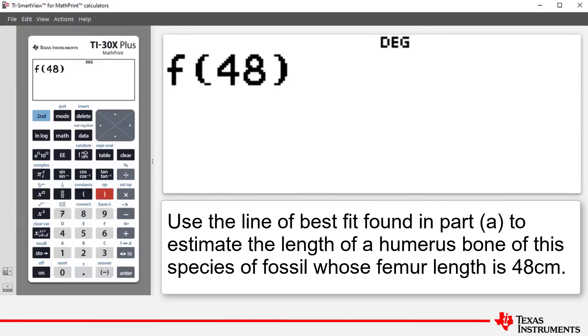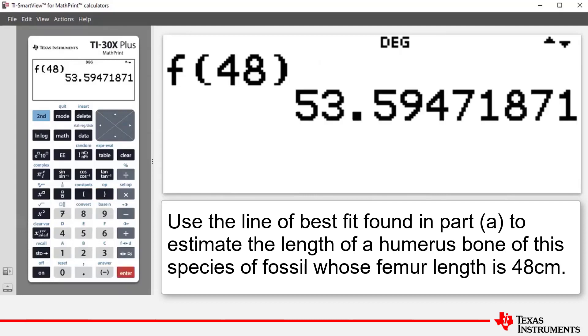In other words, we are substituting X equals 48 into our line of best fit. And we press enter and that's our value. And so correct to the nearest centimeter, the length of a humerus bone of this species of fossil whose femur length is 48 centimeters turns out to be 54 centimeters.